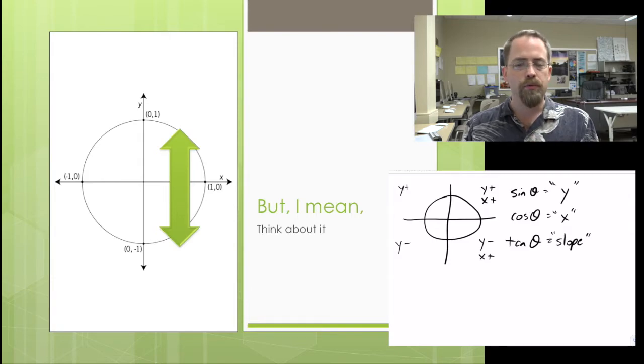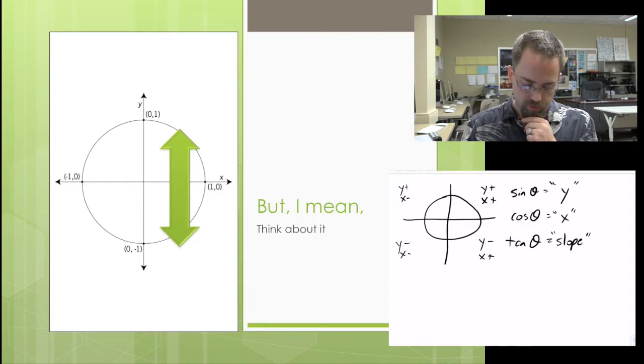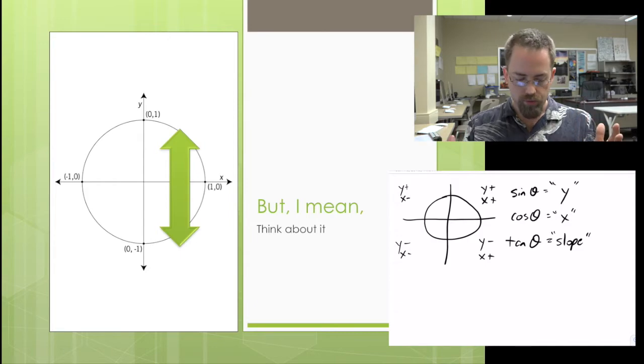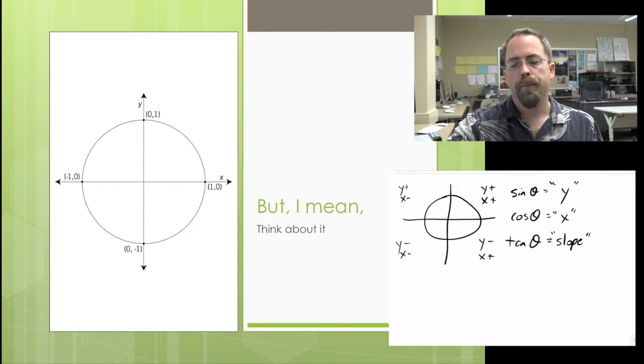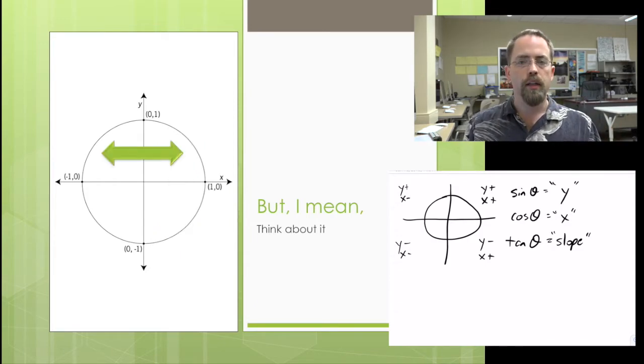So, it can't be first and fourth. That would still only cover the positive x's. But, over here, on the left side of a graph, then the x values are negative. So, arc cosine is going to go first and second. Kind of a strange twist there.